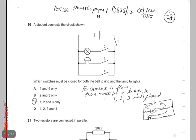Let's go to 30. A student connects the circuit shown, which switches must be closed for both the bell to ring and the lamp to light?